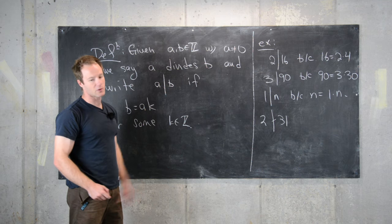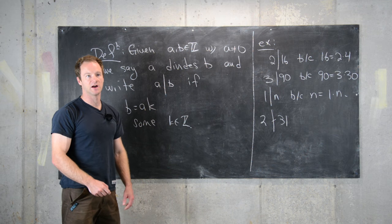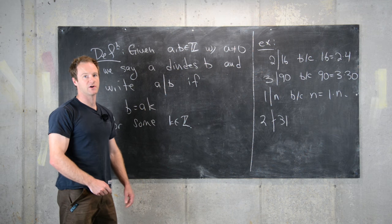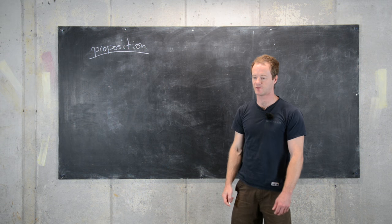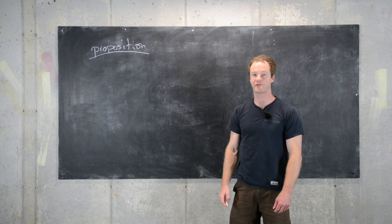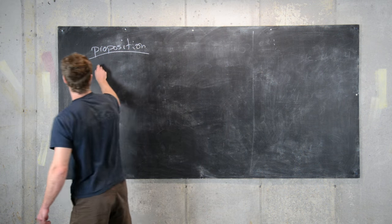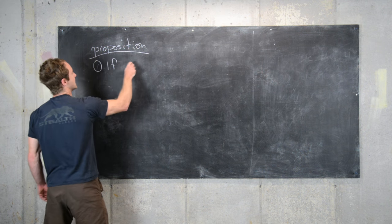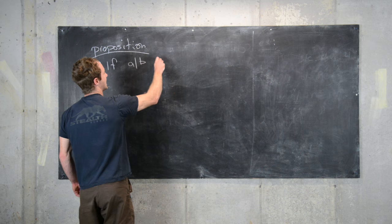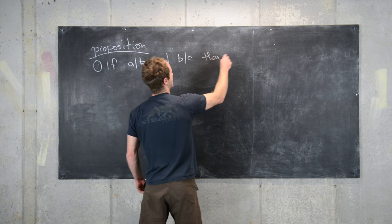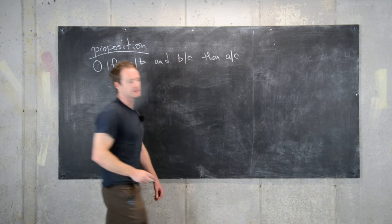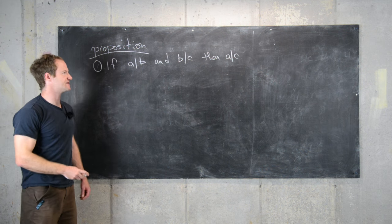I want to clean up the board and then give an important result involving divisibility. Here we want to look at an important result involving divisibility, so it'll have three parts. The first part is as follows: if a divides B and B divides C then a divides C, so there's some notion of transitivity among divisibility.